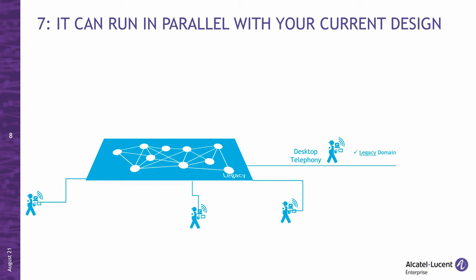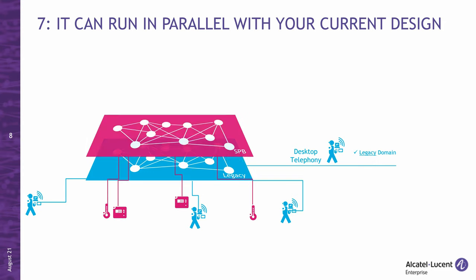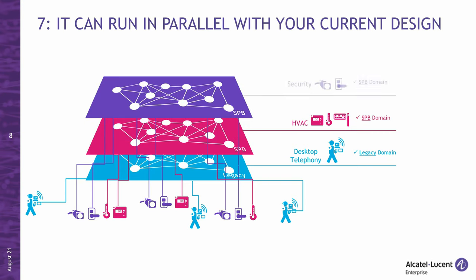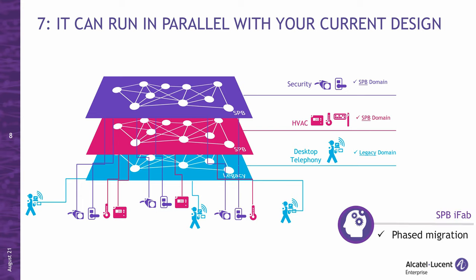Why does this matter? With more and more IoT use cases, there is a need to create virtual segments for those IoT devices, and SPB is ideal for that. At the same time, there is no rush to fix what is not broken. If your current design based on VLANs and routing is serving you well, you can keep it. But you can also add SPB segments for new IoT use cases such as building automation, security, surveillance, biomed devices, etc. Bottom line: this enables a phased migration — we can achieve quick wins by implementing SPB segmentation for specific use cases.